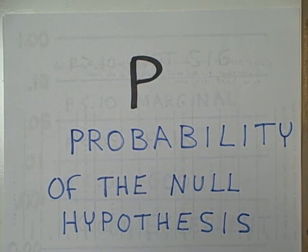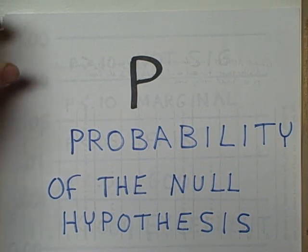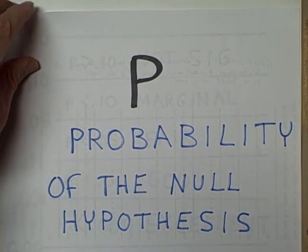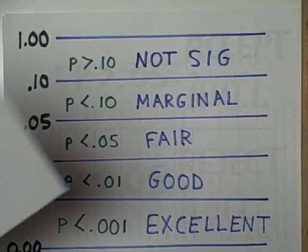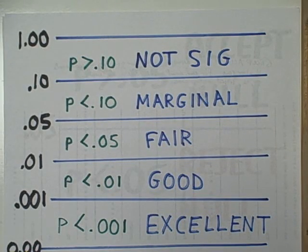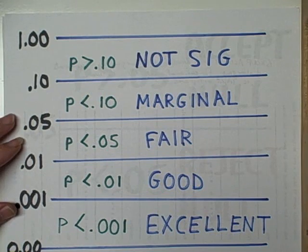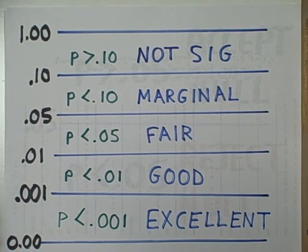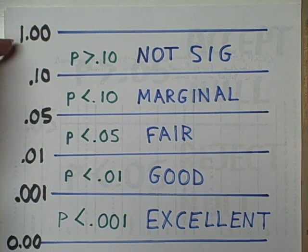The letter p symbolizes this probability. We express probabilities with a range of 0 to 1. Zero would mean that something is absolutely impossible. One would mean that something is an absolute certainty.